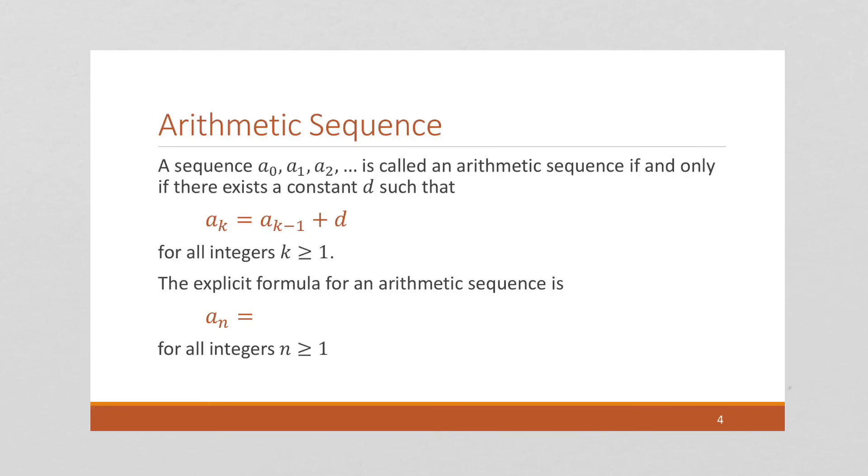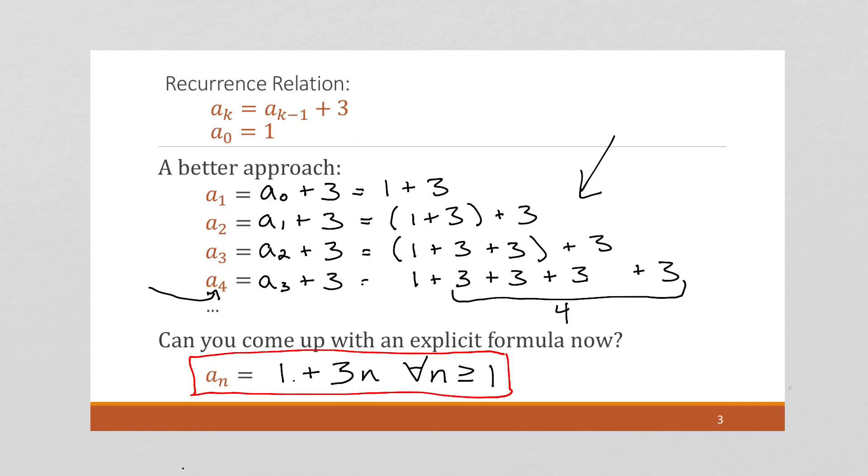It turns out this kind of sequence is called an arithmetic sequence. So we have an arithmetic sequence exists if we have a recurrence relation where each value is equal to the previous value plus some constant. And that's exactly what we had on the previous page. We had each value is equal to the previous constant plus 3 with some starting value.